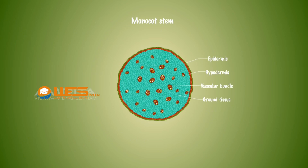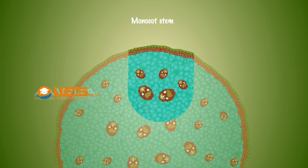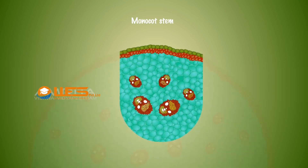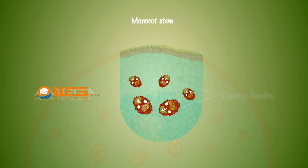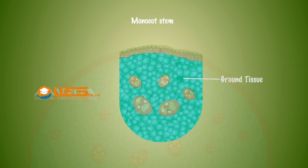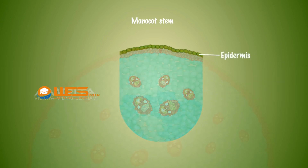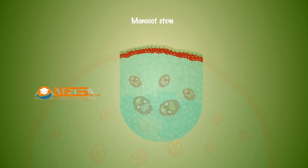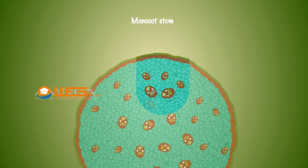Monocot stem: The internal structure of monocot stems reveals some differences with respect to that of dicot stem. The most significant feature of monocot stem is the occurrence of scattered vascular bundles and differentiated ground tissue. Epidermis is the outermost covering of the stem, made up of barrel-shaped parenchyma cells. Hypodermis lies between the epidermis and is made up of sclerenchymatous cells.